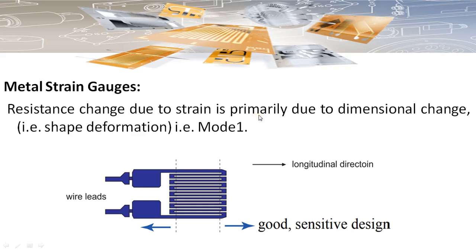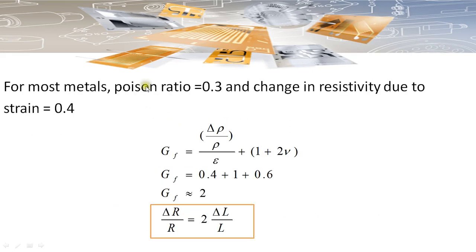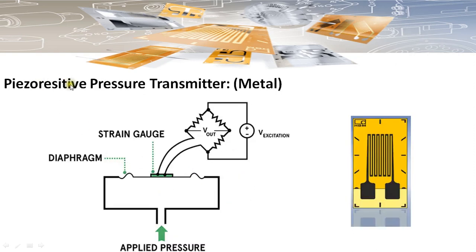For metal strain gauges, the resistance change due to strain is primarily due to dimensional change — that is, Mode 1 dominates. For most metals, the Poisson's ratio is approximately 0.3, and the change in resistivity due to strain is small or negligible, approximated as 0.4. Substituting these values, the gauge factor of a metal strain gauge comes out to around 2. The metal strain gauge is bonded over a diaphragm; whenever pressure is applied, the diaphragm stretches and the strain gauge stretches with it, causing a change in resistance.